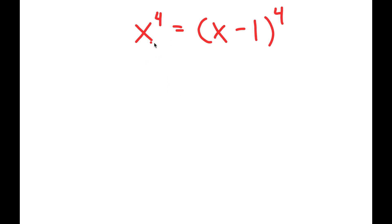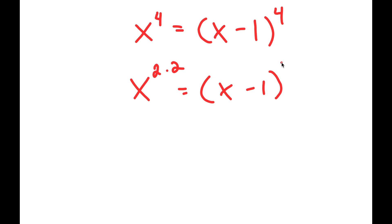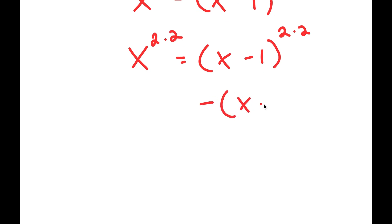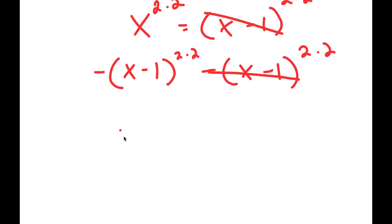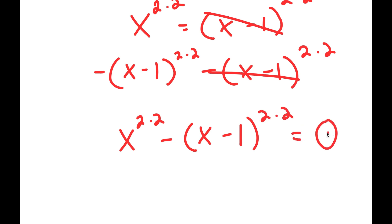To start, I'm going to rewrite x to the power of 4 as x to the power of 2 times 2. And I'm going to do the same thing for x minus 1 to the power of 4 — rewrite it as x minus 1 to the power of 2 times 2. Then I'll subtract x minus 1 to the power of 2 times 2 from both sides, so I get x to the power of 2 times 2 minus x minus 1 to the power of 2 times 2 is equal to 0.